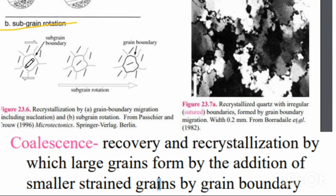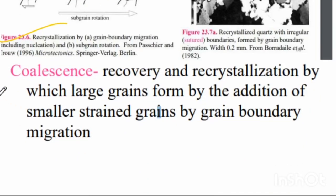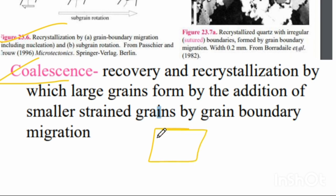In sub-grain rotation, the grain tilts progressively with increasing recrystallization. The extreme case of recrystallization is coalescence — this has also been asked in the UPSC exam. It is very important to know that these five processes — cataclastic flow, pressure solution, plastic intracrystalline deformation, recovery, and recrystallization — all belong to metamorphic processes.